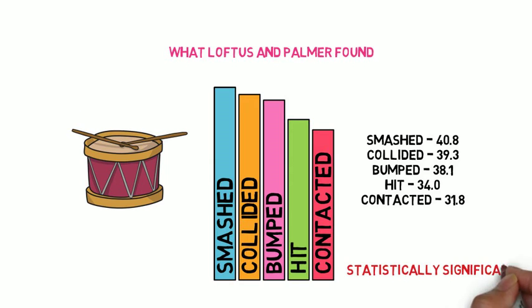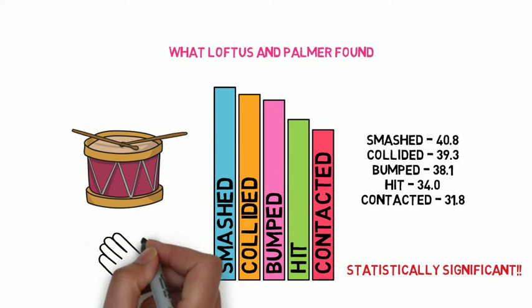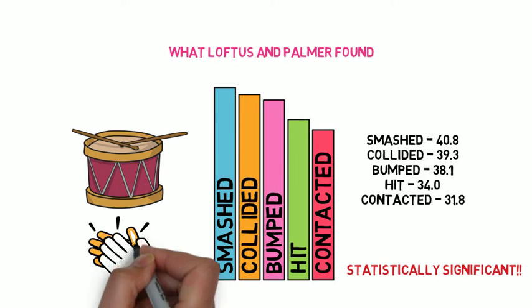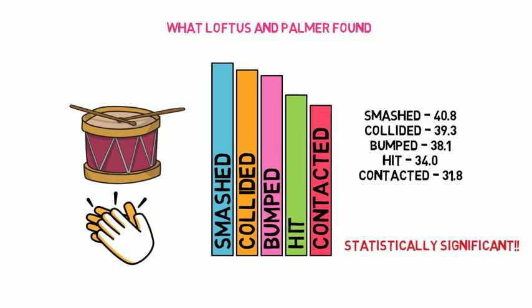Now, that was a statistically significant result. So statistically significant between the estimates of speed based on the different verbs. And obviously, Loftus and Palmer were very pleased there that they'd found support for the hypothesis.